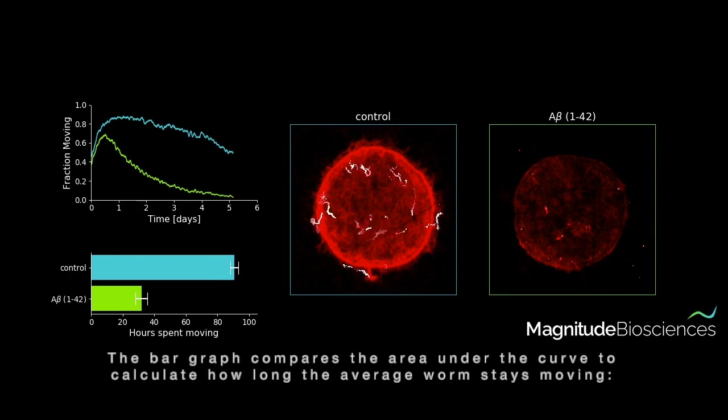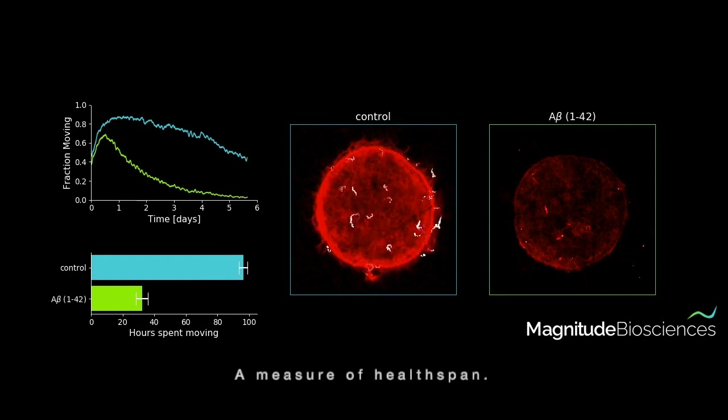The bar graph compares the area under the curves to calculate how long the average worm stays moving, a measure of health span.